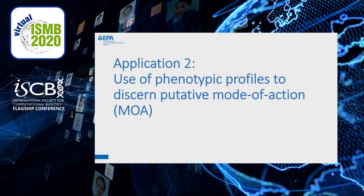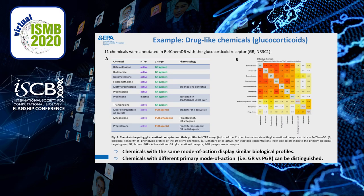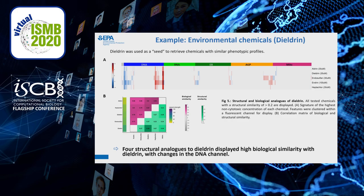The second application looks not at potencies but at the qualitative differences between profiles. We hope to use phenotypic profiles to group chemicals that have a similar mode of action. I calculate this by performing a Pearson correlation between the 1,300-feature vector of one chemical and the vector of another. Here is an example of drug-like chemicals that we grouped: a set of glucocorticoid receptor agonists. Some of them have a similar profile, while some look different. Looking closer at the available data, we found that some of these chemicals have the progesterone receptor as their primary target rather than the glucocorticoid receptor, and it seems our assay was able to distinguish between the two. We also have evidence that such grouping works for environmental chemicals — here is an example of organochlorines.